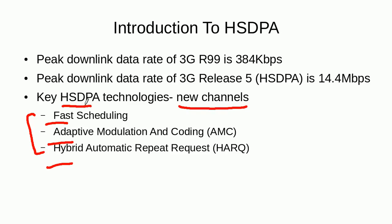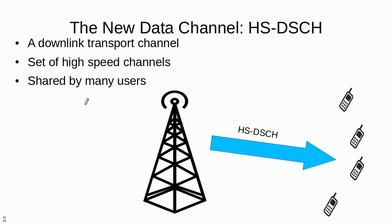The new transport channel that was introduced in HSDPA was the high speed downlink shared channel. It was basically a set of channels with high data rate, and one such channel can be shared by many users in the downlink.